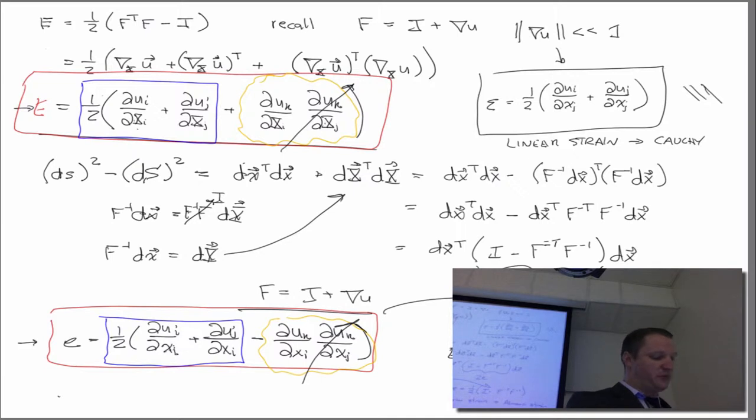And so then when you compare the two, if you compare the Lagrangian strain and the Eulerian strain, the first terms look similar but one of them is with respect to big X, one of them is with respect to little x.